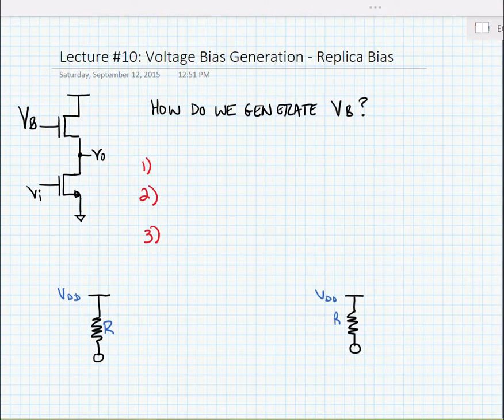In the last lecture we learned that an active load would provide higher voltage gain than a resistive load. So we have this MOS common source amplifier and we noted that we would need to generate a bias voltage VB for the active current source load. So how do we generate VB?